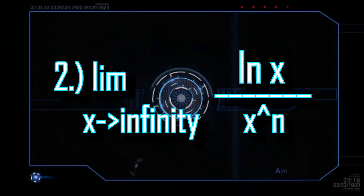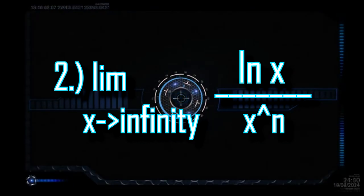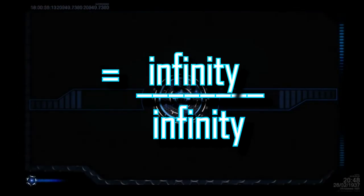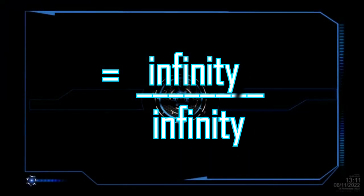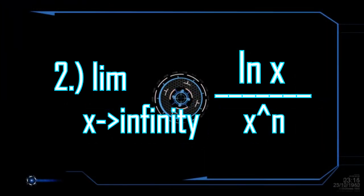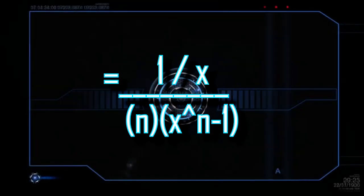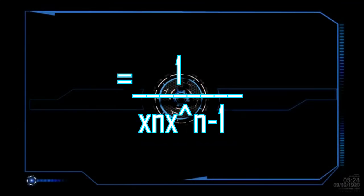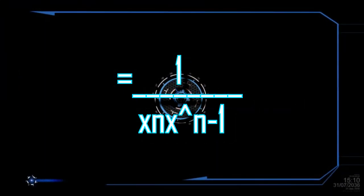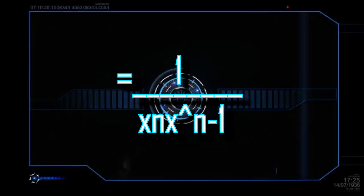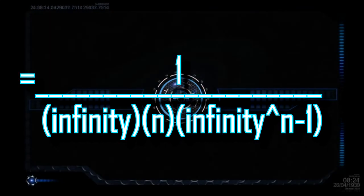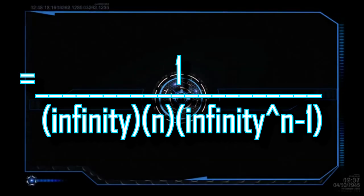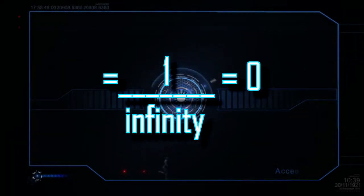Let's take a look at number 2. The given is the limit of ln(x) over x raised to n as it approaches infinity. When we substitute infinity, we get the indeterminate form infinity over infinity. So we get the derivative of the numerator ln(x), which is 1 over x, and the derivative of the denominator x^n, which is n times x^(n-1). Next, we get the reciprocal: 1 over x times n times x^(n-1), or 1 over n times x^n. Substituting infinity, we get 1 over infinity times n times infinity^(n-1). Finally, the answer is 0, because 1 over infinity is equal to 0.